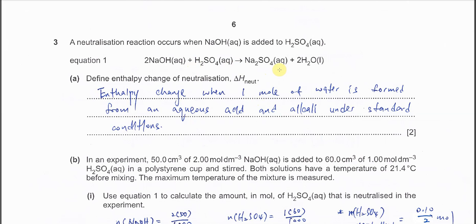Part A, define enthalpy change of neutralization. You just need to know that is the formation of one mole of water from the reactions between the H+ and hydroxide. So it's always one mole of water from aqueous acid and alkaline under standard condition. It's better for you to put this under standard condition because the neutralization happens under standard condition, which is 25°C, 101 kilopascal.